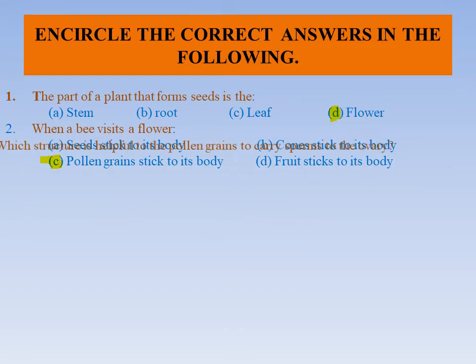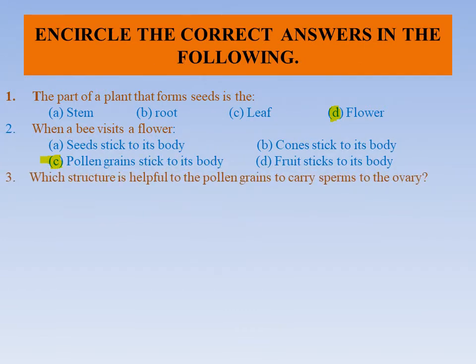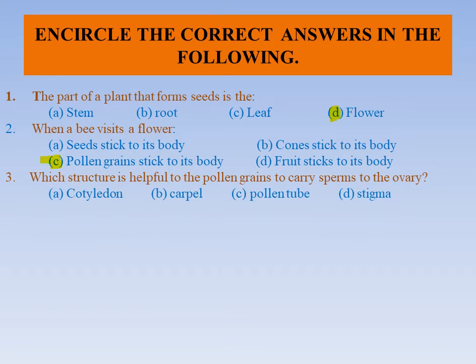When a bee visits a flower, the pollen grains stick to the body. So option C is correct — encircle that option.